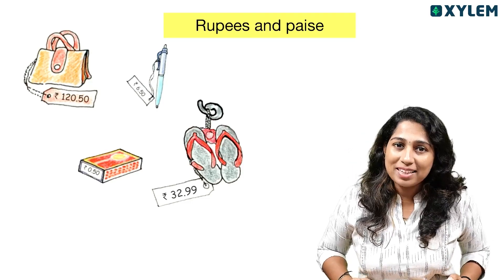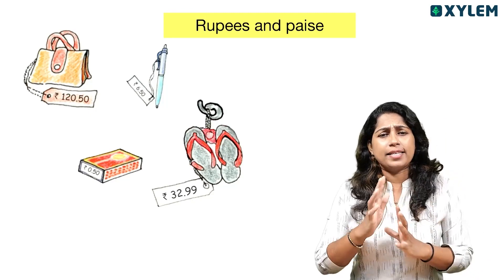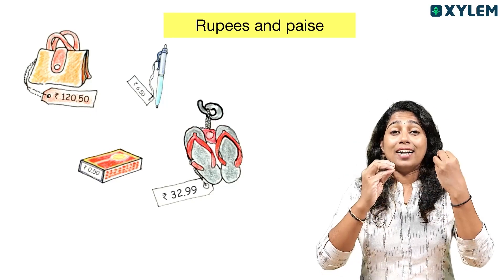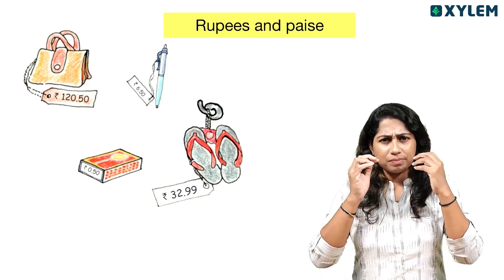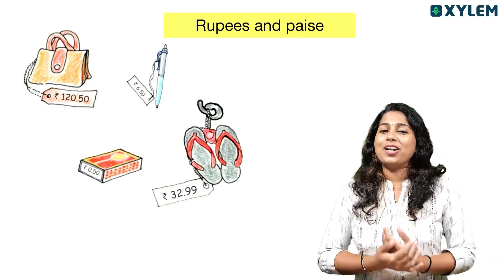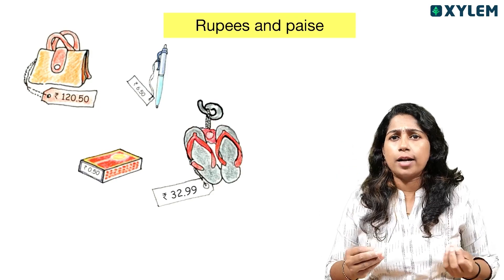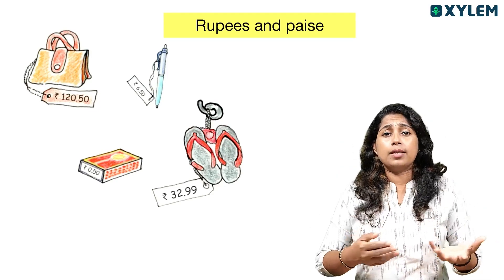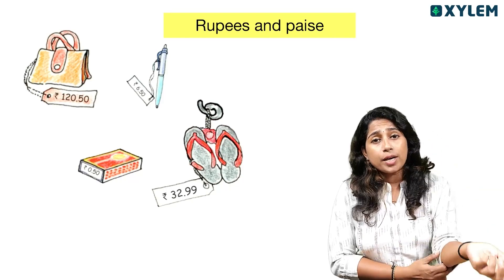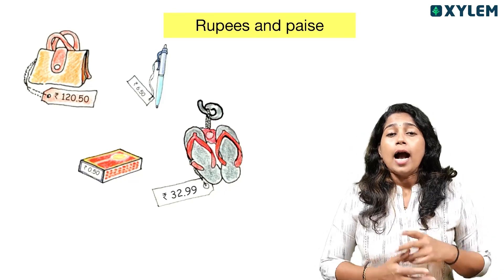We are going to discuss math and decimals in class today. We bought a money method — when we go to the shop, we look at the things that we bought: a pen, a matchbox, soap, toys. We bought cash here now.